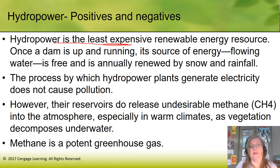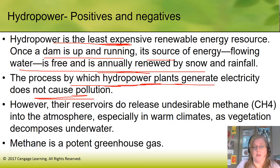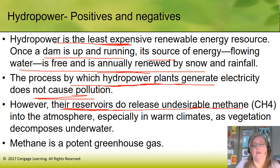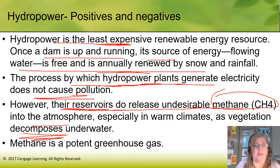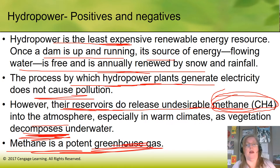Hydropower is the least expensive of the renewable resources. Once the dam is up and running, the flowing water is free and annually renewed by snow and rainfall. The process of generating electricity doesn't cause pollution. However, reservoirs will release some methane as the plants and grasses that were in that area before it was flooded decompose underwater — but that's only during the first year or so. Methane is a very potent greenhouse gas, but the release is temporary.